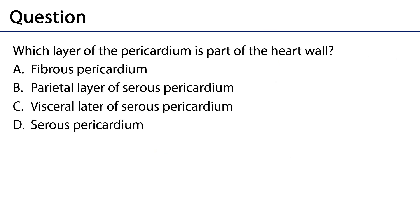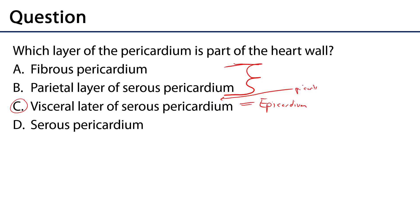The assessment question for this video is: which layer of the pericardium is part of the heart wall? The correct answer is the visceral layer of the serous pericardium, also called the epicardium. The fibrous pericardium and parietal layer are fused together, and between the parietal and visceral layers of the serous pericardium is the pericardial cavity. The correct answer is C — visceral layer of the serous pericardium, or the epicardium.